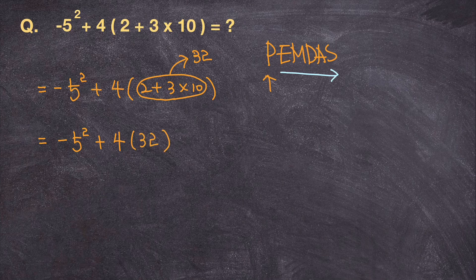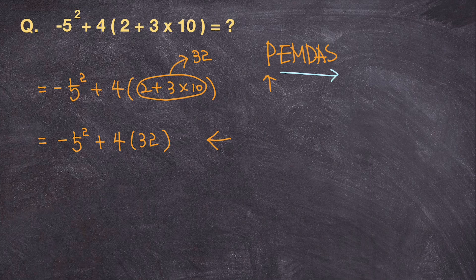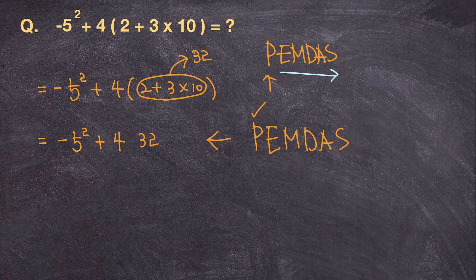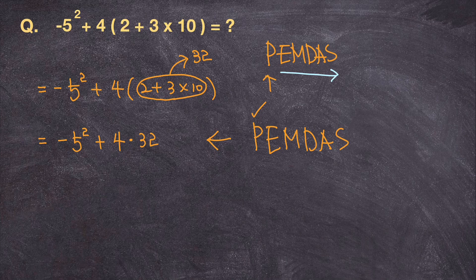And then from this expression, if I write PEMDAS again, parenthesis is already taken care of. So why don't we just write 4 times 32 like that. And the next part is exponent. We need to take care of exponent next.